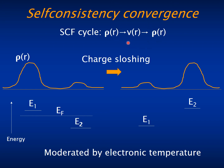You have to iterate this until the new density is equal to the input density. In practice, what happens is that this simple cycle does not converge, so that the density gets wild. A simple procedure is to start the new iteration not with the new density, but with a mixing of the old density and the new density.